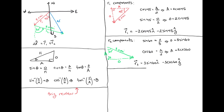Now that we have r1 and r2 written in component form, displacement is r1 plus r2. Making substitutions and doing the calculations, delta r is minus 2 cosine 45 plus 3 sine 60 i-hat, minus 2 sine 45 minus 3 cosine 60 j-hat.